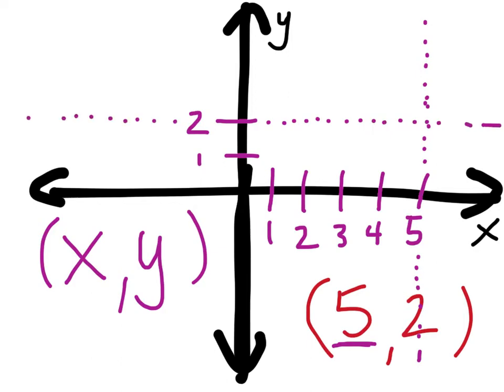The nifty thing about this is — see where these two lines intersect, meet, come together — that is where the point (5, 2) is right here.